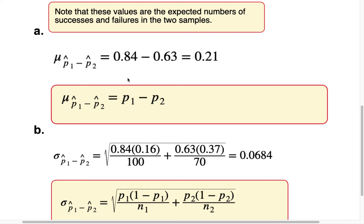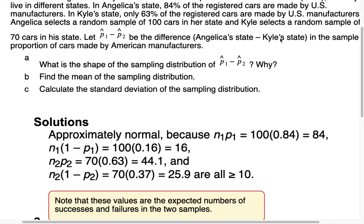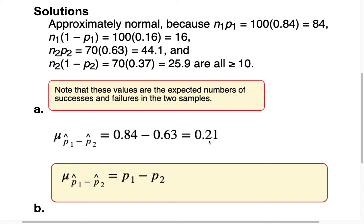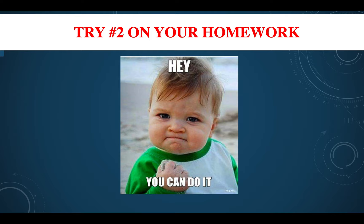Be careful with the notation. p₁ is Angelica's state, which is 0.84, and p₂ is Kyle's state, which is 0.63. So the mean of p̂₁ minus p̂₂ equals 0.84 − 0.63 = 0.21, or 21%. This is the center of the sampling distribution of proportion differences. It's straightforward — just assign the correct values to p₁ and p₂.